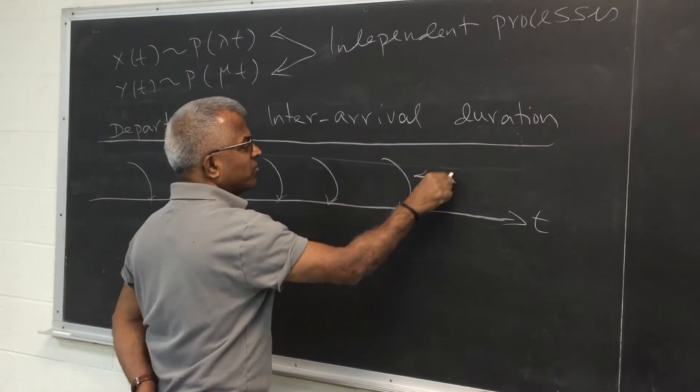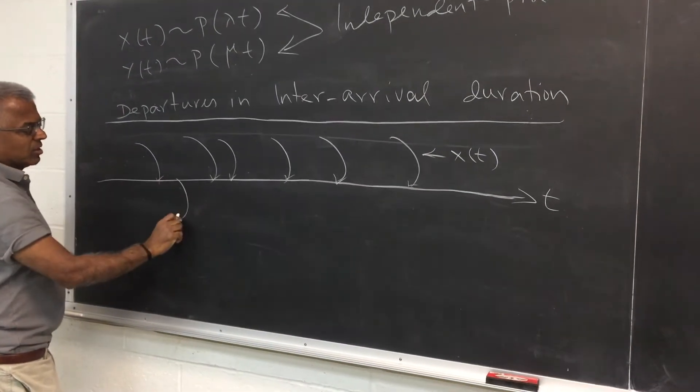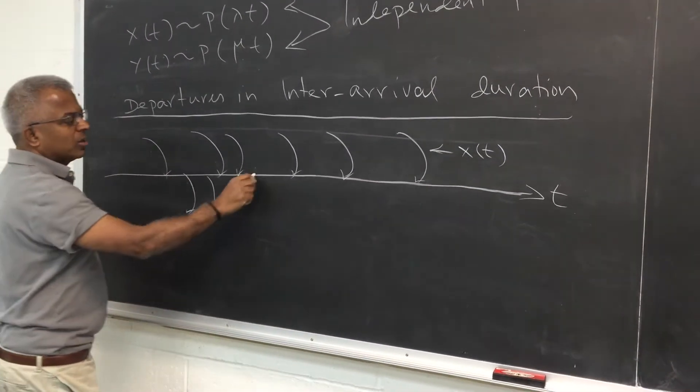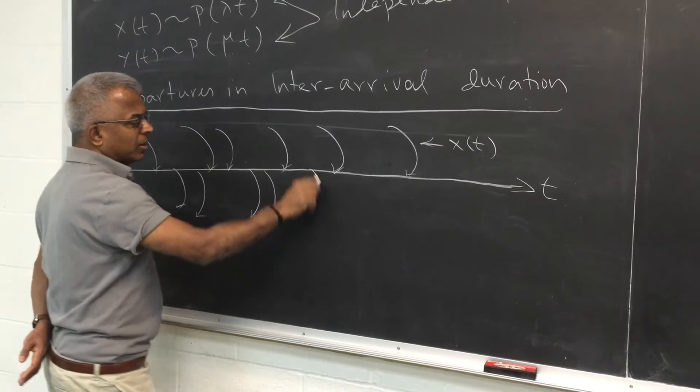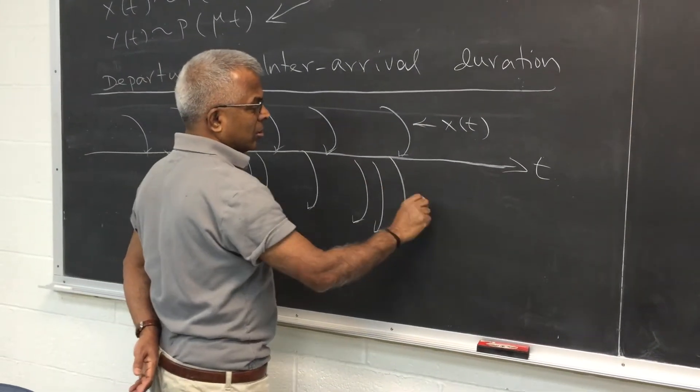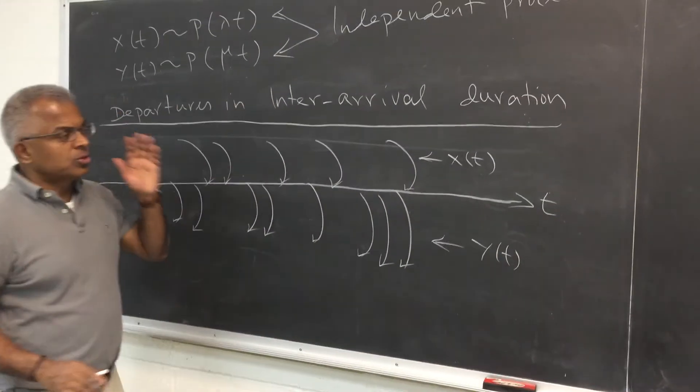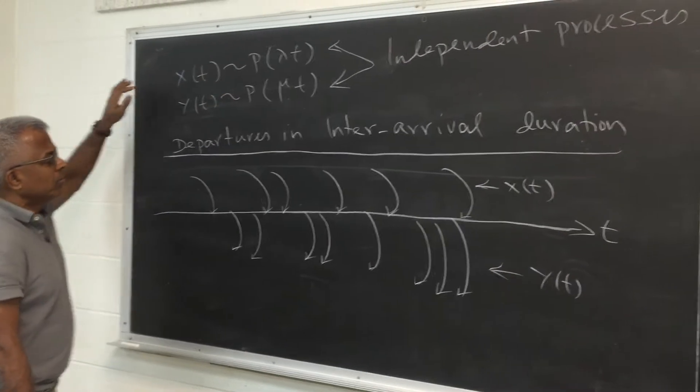So this is x of t, and the other one is a departure process. Things are departing. Both are independent, so things are happening randomly. And this is y of t. So each is Poisson with parameters lambda and mu.